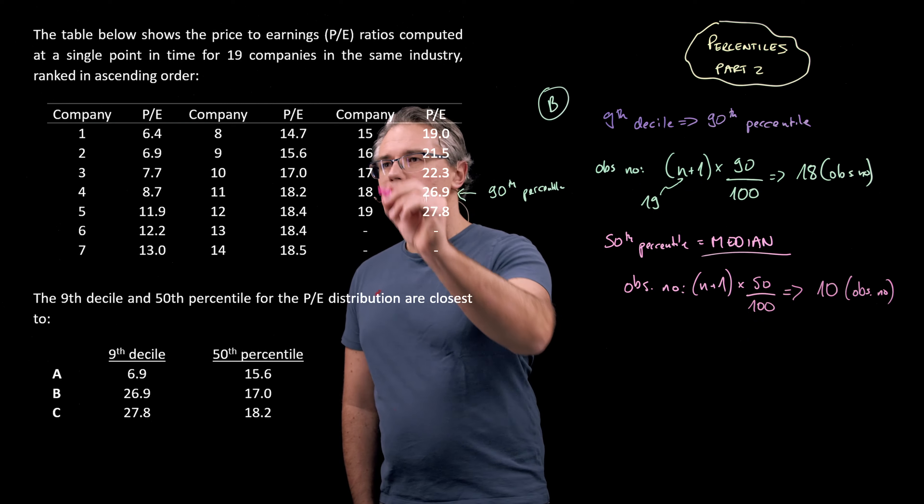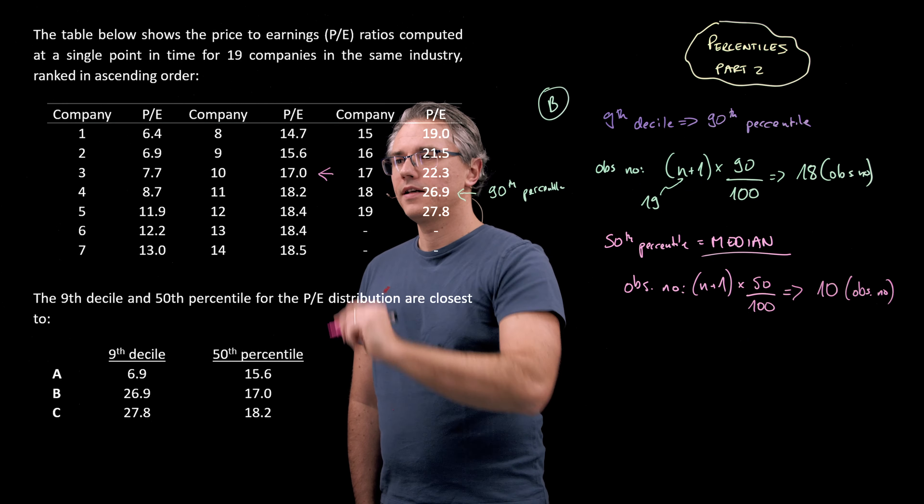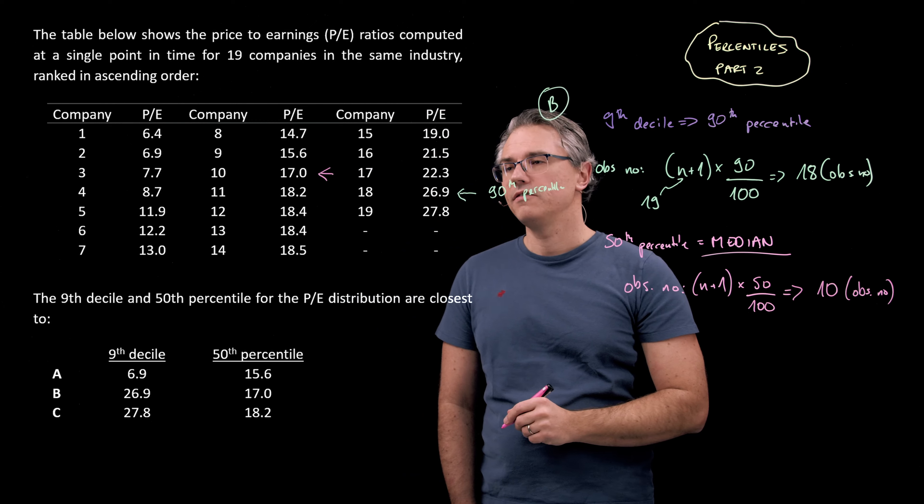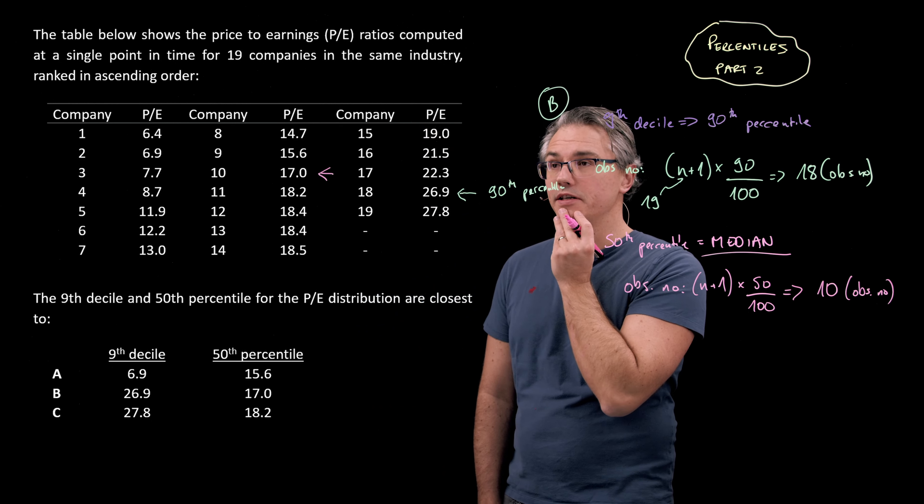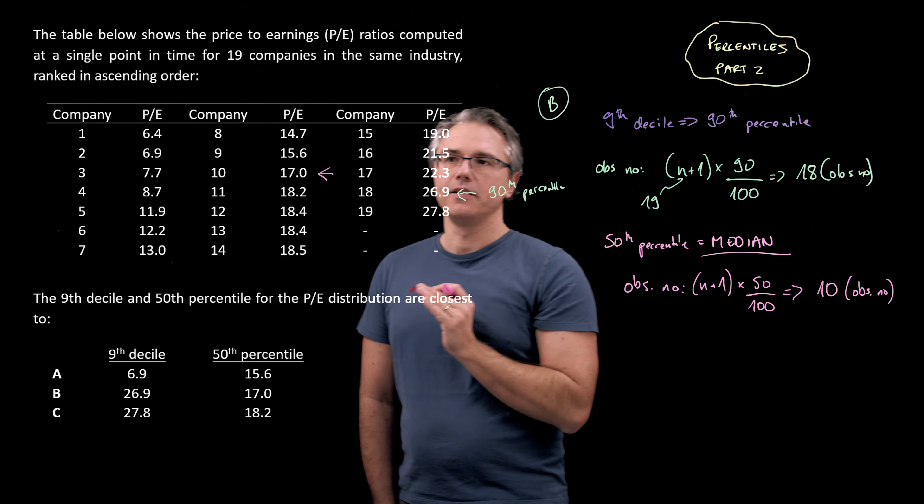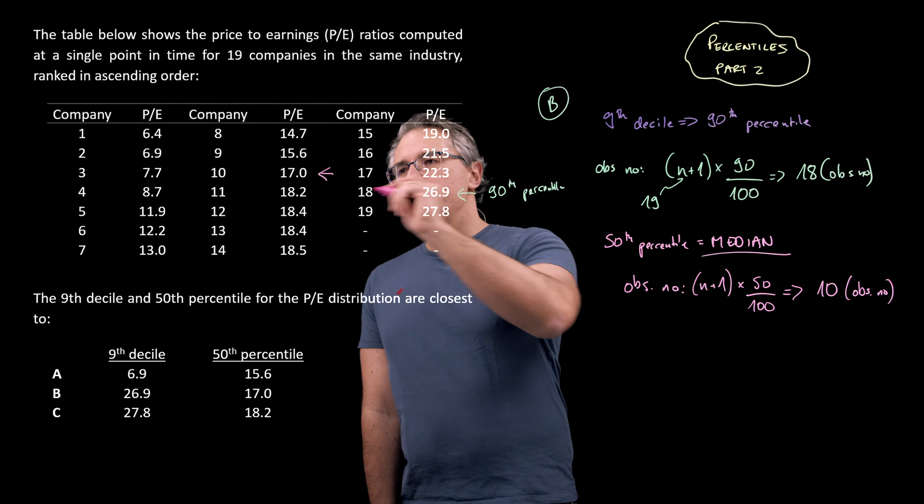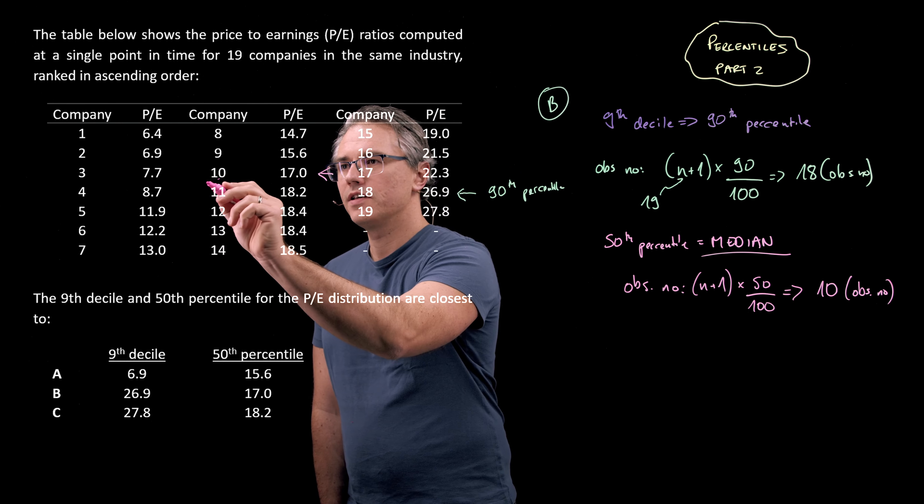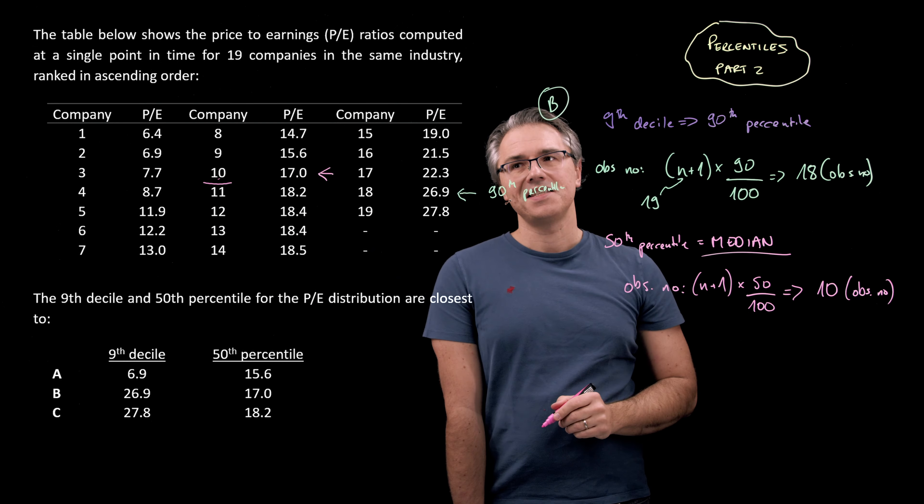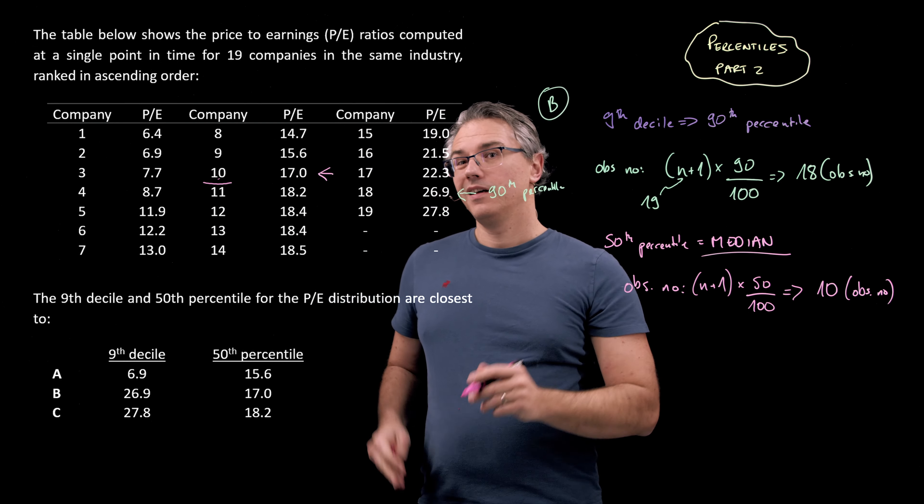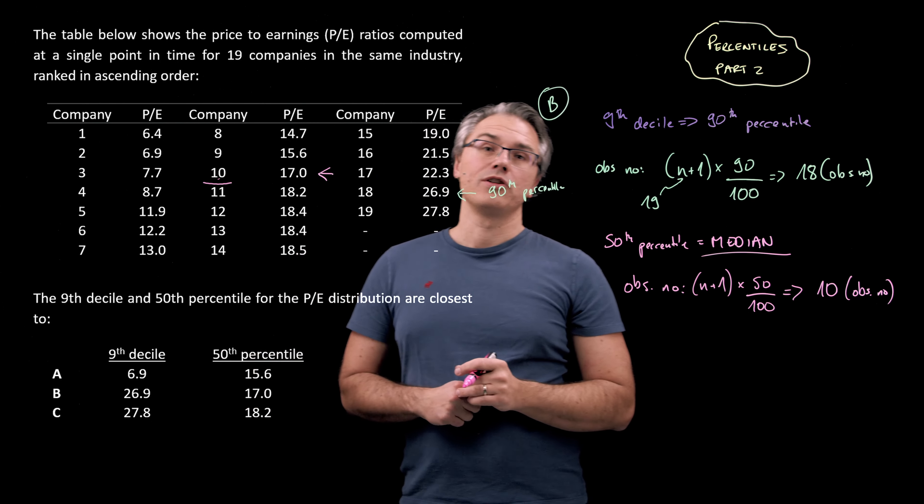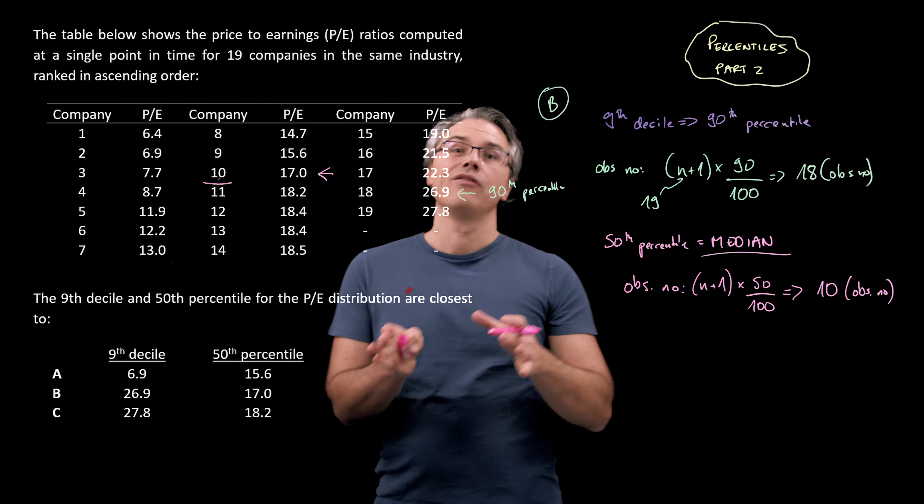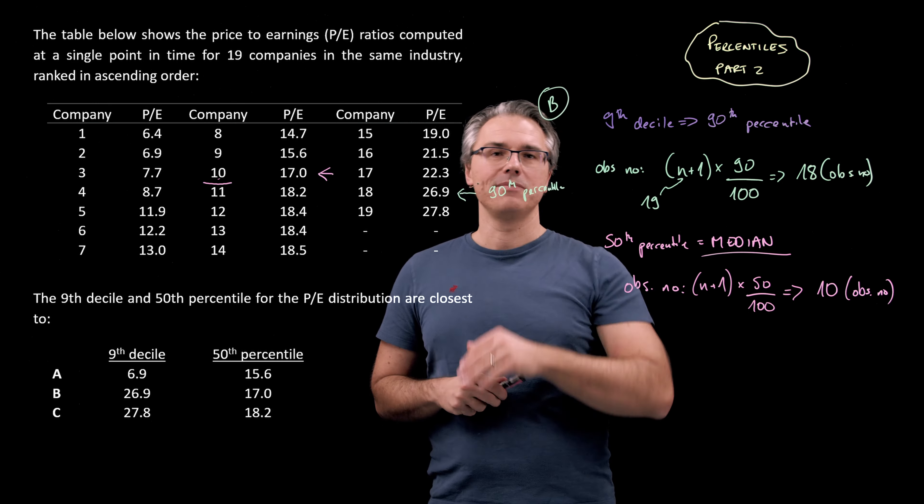And observation number 10 is sitting right here. That's the number 17, which simply confirms that we were right with the answer B as being the correct one. And please appreciate the logic of it. If we pick the number 10 over here, then the same number of observations lie at or below this figure as the observations which lie at or above it. So that is indeed correct. And answer B is correct as well.